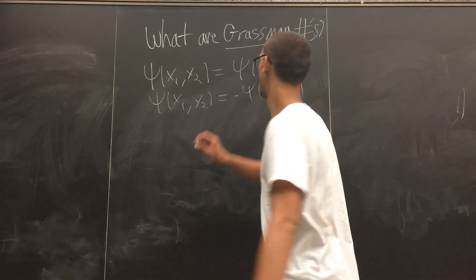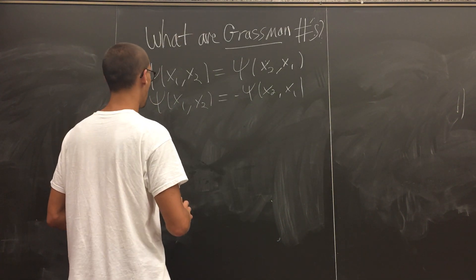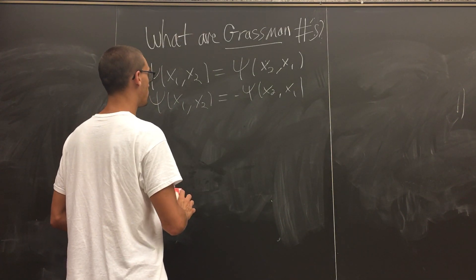How are we going to describe this? We can use Grassman numbers, Grassman variables, and these have cool properties.